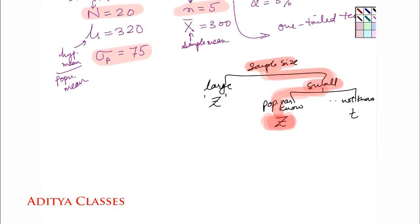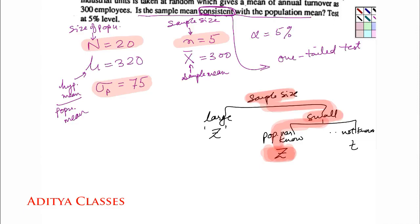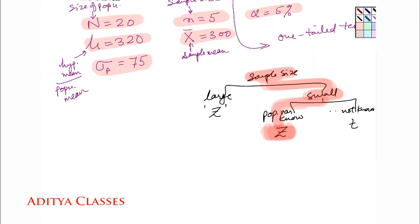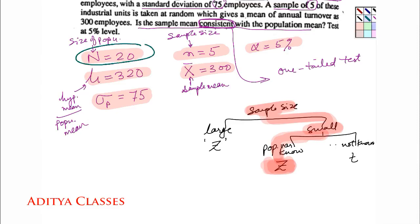I will apply z test. The formula here would be z test. Let us recap all the values given. Size of population is given, mean of population is given, standard deviation of population is given, size of sample, mean of sample, level of significance. Now formula for z test will be a little changed because of this population size. It is not infinite, rather it is 20 or finite.